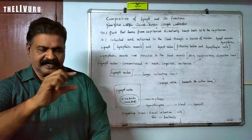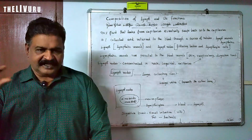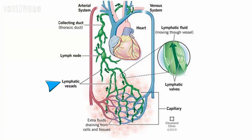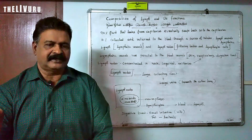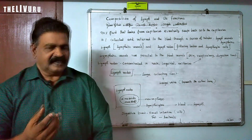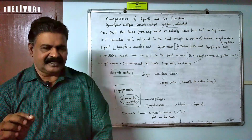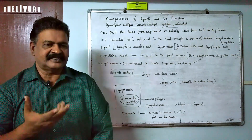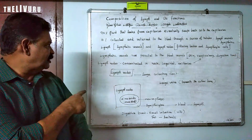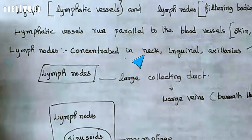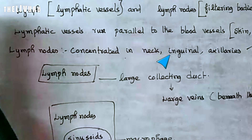The lymphoid organs are very important. When the lymph is passing through the lymphatic vessels, these lymphoid organs play a key role. These are lymph nodes — here the lymphoid organs are very important to sustain life. Lymph nodes are concentrated in the neck region.